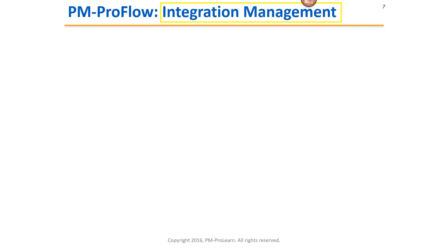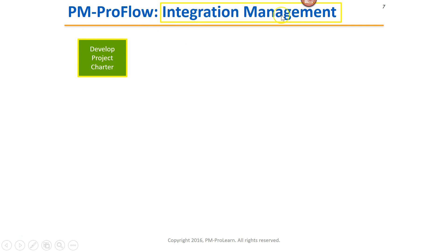So let's take a look at the flow chart for integration management. I'm going to go over this quickly — I'm not going to go over it in depth as we would in class, but I'm going to briefly show you how this flow chart works with animation in our classroom. We start out the integration management knowledge area with the process called Develop Project Charter, and note that it is highlighted in green to show that this is an integration management process. Other processes on this page that are not part of integration management will not be highlighted.